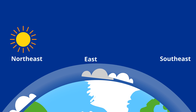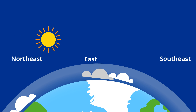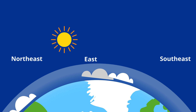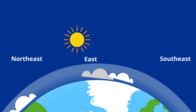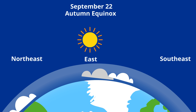After the summer solstice, the sun starts setting less to the north until September 22nd, which is the autumn equinox, or the first day of autumn. On this day, the sun again rises due east and sets due west.